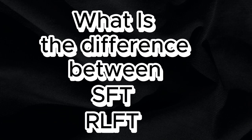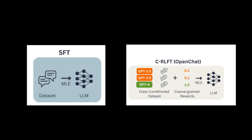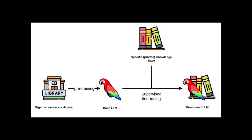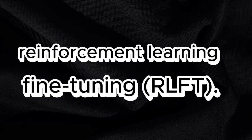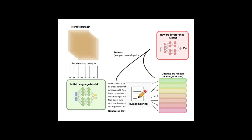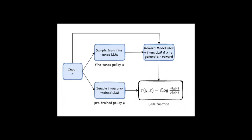What is the difference between SFT and RLFT methods? OpenChat uses two methods to align open source base language models to specific abilities: supervised fine-tuning (SFT) and reinforcement learning fine-tuning (RLFT). SFT methods involve training the model on a small amount of labeled data specific to the target task — simple and effective, but requires high-quality labeled data which can be expensive and time-consuming. RLFT methods use reinforcement learning to fine-tune the model, relying on feedback from the environment in the form of rewards or penalties — more flexible but requiring more computational resources and harder to train.